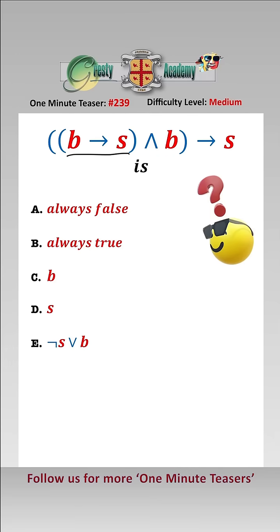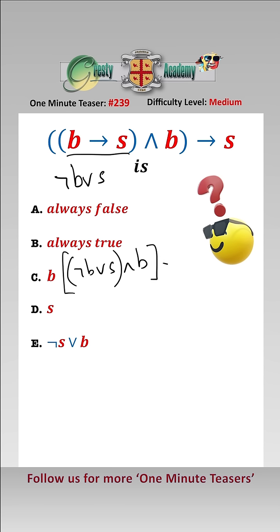B implies S. By the implication law, we can write this as not B or S. So this becomes (not B or S) and (B implies S).